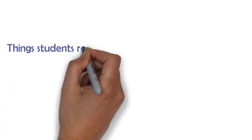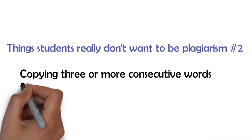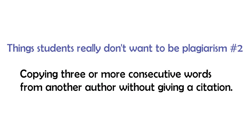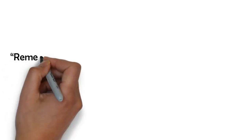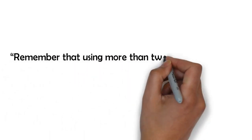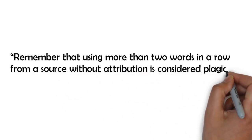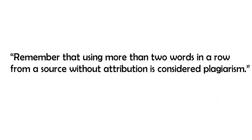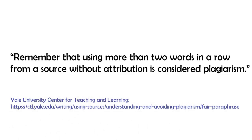That brings us to things students really don't want to be plagiarism number two, which is copying three or more consecutive words from another author without giving a citation. This one definitely gets people angry at me because it makes them realize how much work is involved in paraphrasing. Let me back up my statement with a quote: 'Remember that using more than two words in a row from a source without attribution is considered plagiarism.' This comes from Yale University, which is a fairly fancy schmancy kind of institution, so they probably know what they're talking about.